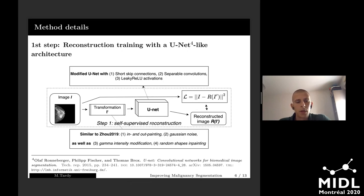In the first step, we aim to initialize the weights of our U-Net reconstruction model in the best possible way. Similar to Zhu, we introduced different kinds of transformations like inpainting, outpainting, and Gaussian noise. But we also added gamma intensity modification and random shape inpainting.